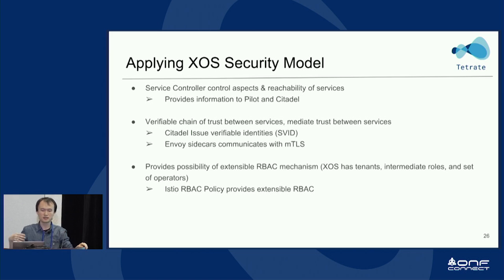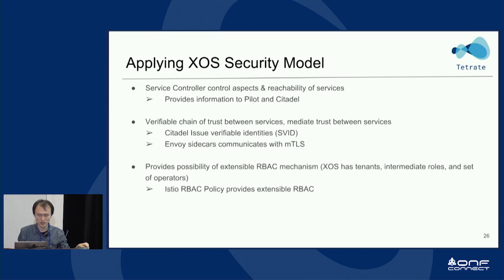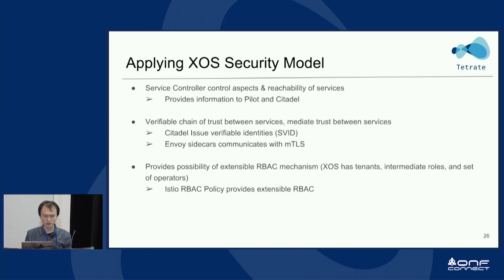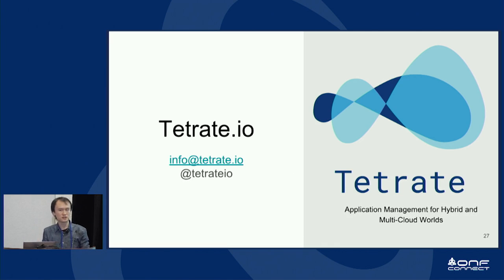To put it all together as a recap: the service controller controls the aspect and provides information to the Istio control plane — Pilot and Citadel. Citadel provides a verifiable chain of trust by providing SVIDs to each sidecar proxy. The sidecar proxy enforces encryption for service-to-service encrypted communication. Then the RBAC mechanism, with the Envoy RBAC filter and configuration language, uses Istio RBAC policy to enforce fine-grained, L7-aware authorization at each service. That's pretty much everything. Thank you for listening.